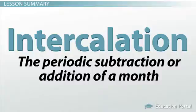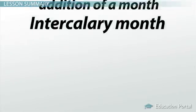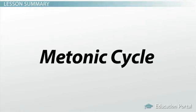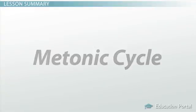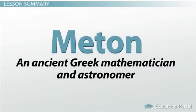Intercalation is the periodic subtraction or addition of a month, and such a month is called an intercalary month. One such method that used intercalary months, called the Metonic Cycle, was propagated by an ancient Greek mathematician and astronomer called Meton.